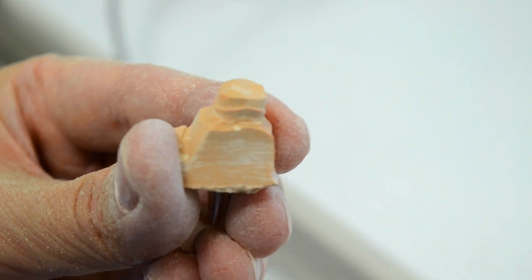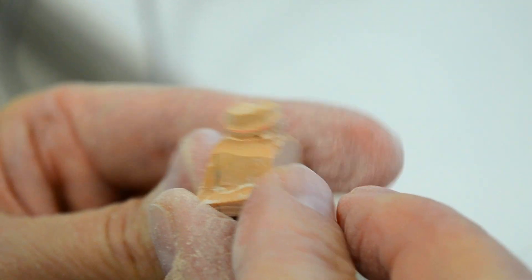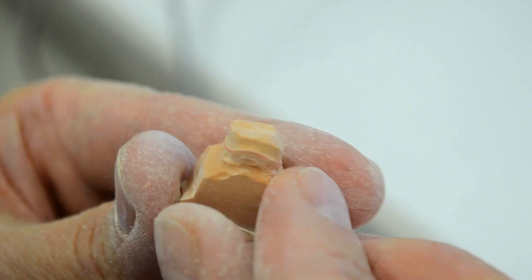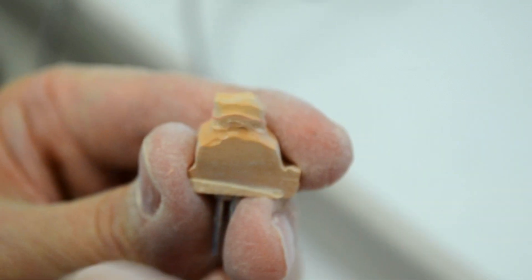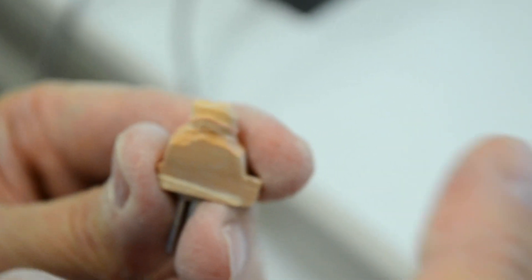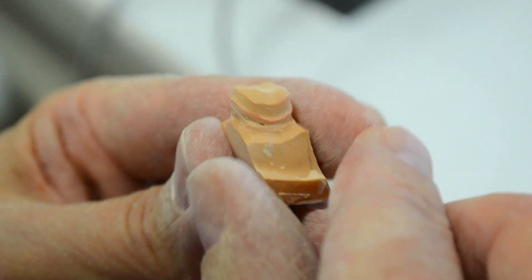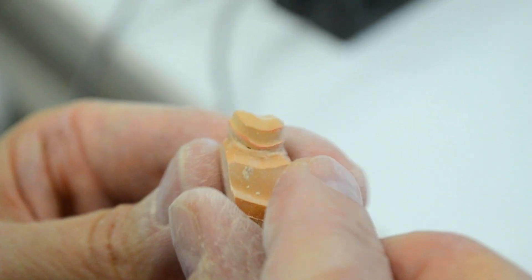And there you have it. This is a perfectly marked die. The reason that red is used is it's a color that contrasts nicely with the blue color of inlay wax, so there's no mistaking about where the margin is.